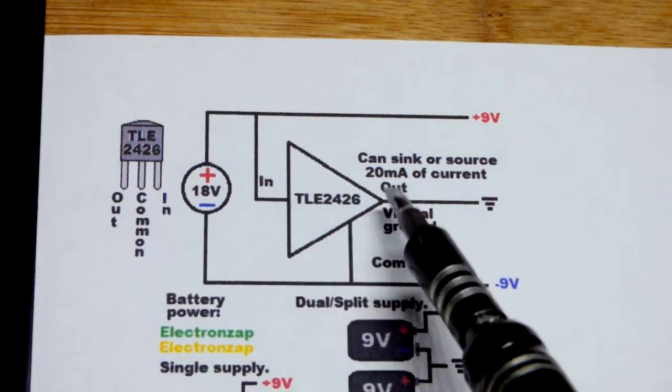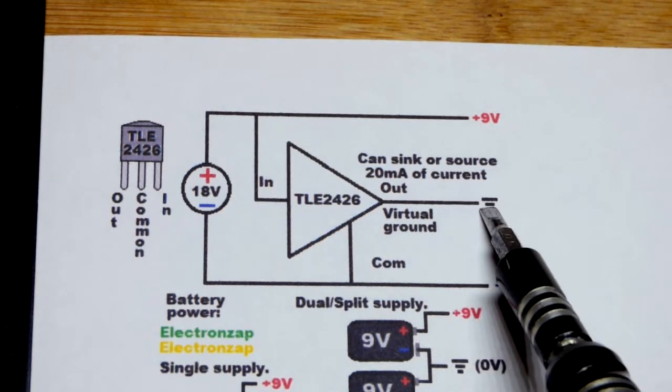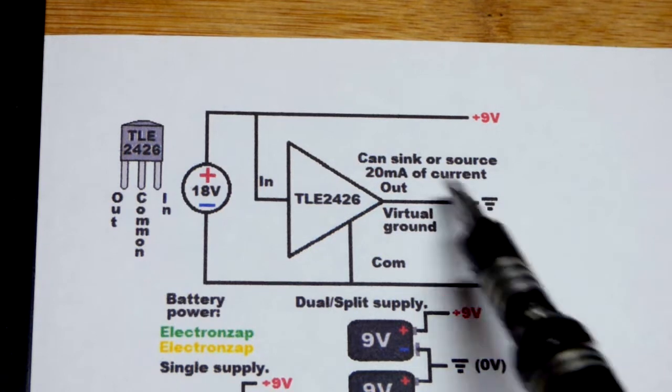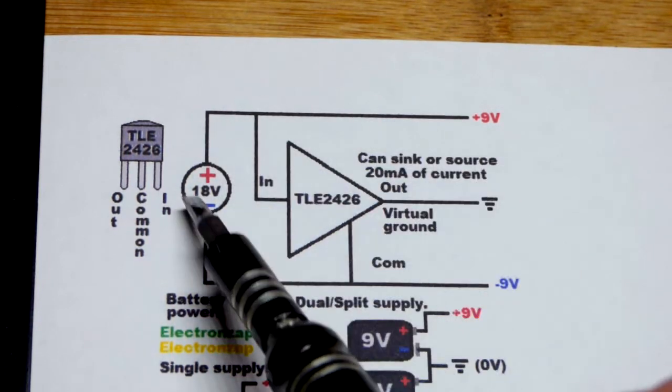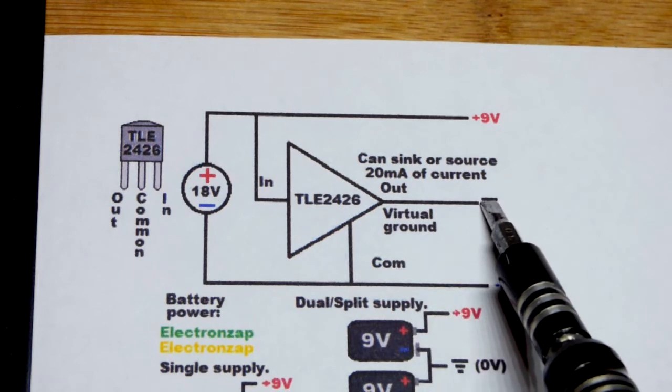So it has three terminals. What it is, it's a virtual ground, so you create a ground instead of the negative side of the power supply, rail splitter. So you got the power of the power supply, you're splitting that. You're cutting the voltage in half right there.